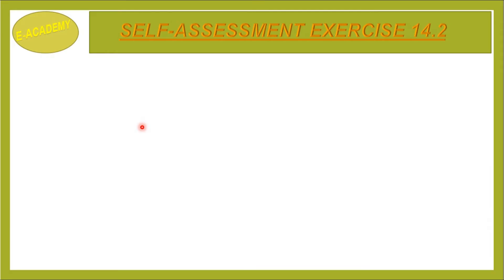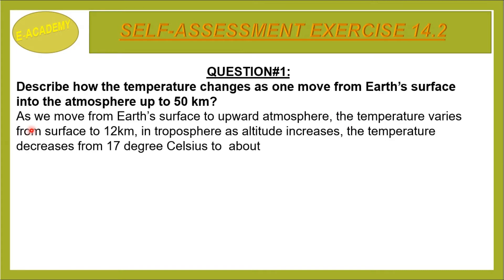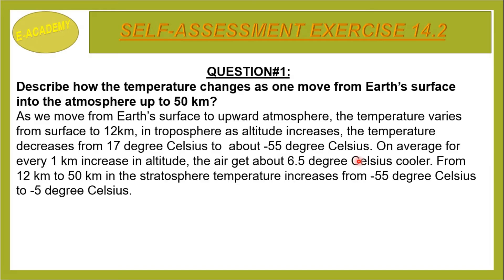Self Assessment Exercise 14.2, Question Number 1: Describe how the temperature changes as one moves from Earth's surface into the atmosphere up to 50 km. As we move from Earth's surface upward, the temperature varies. From surface to 12 km, in the troposphere, as altitude increases, the temperature decreases from 17°C to about minus 55°C. On average, for every 1 km increase in altitude, the air gets about 6.5°C cooler.